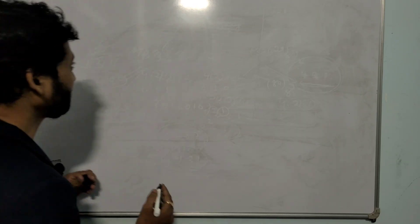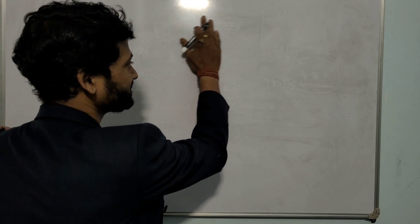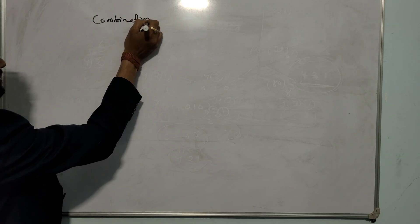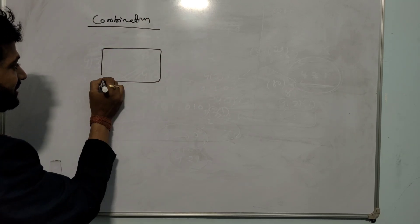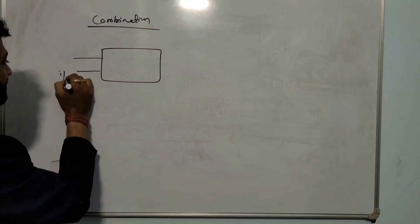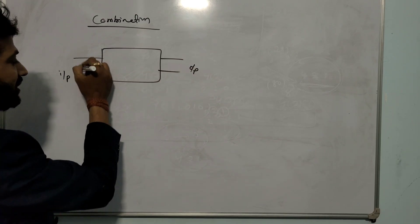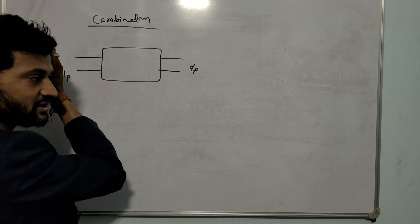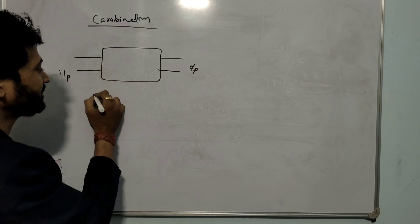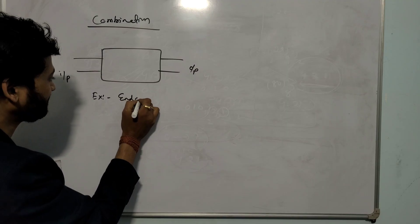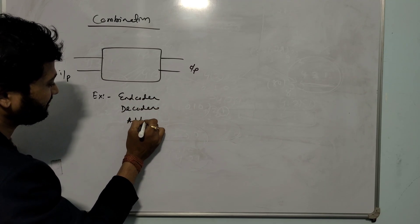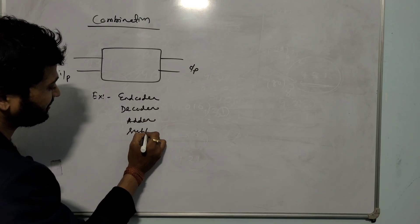My name is SRP, you are watching my channel Love You Science. So, what is a combinational circuit? In a combinational circuit, the output depends directly on the input. These are the inputs and this is the output. Examples of combinational circuits include encoder, decoder, adder, and subtractor.